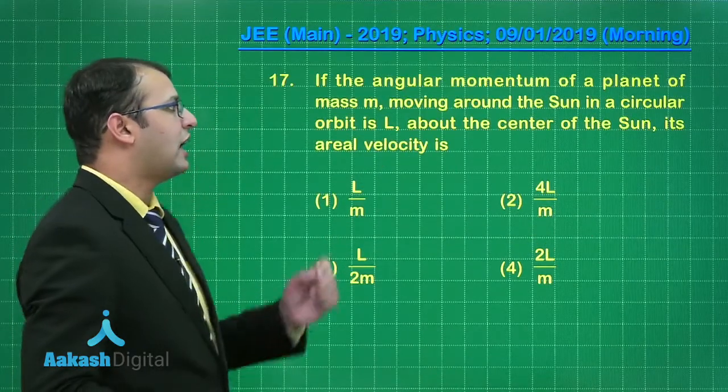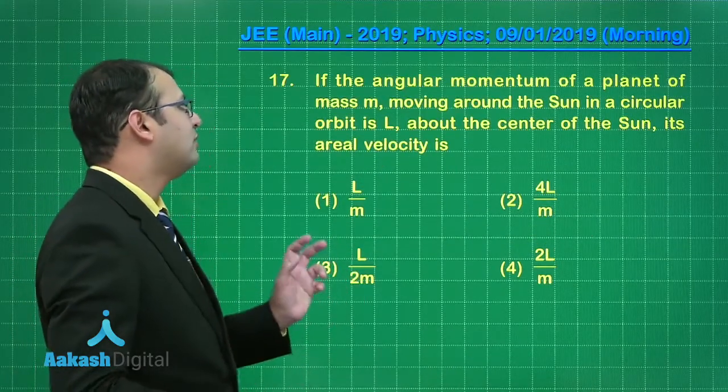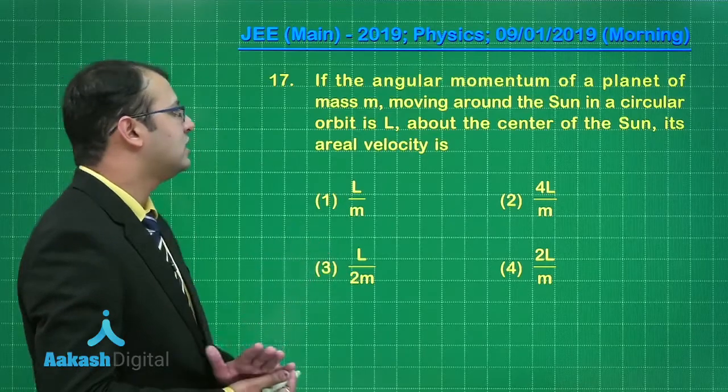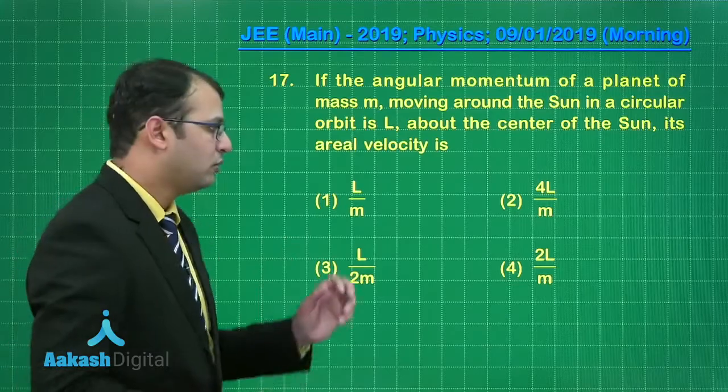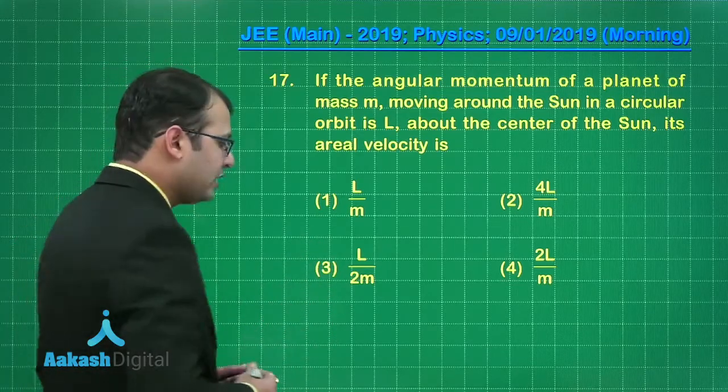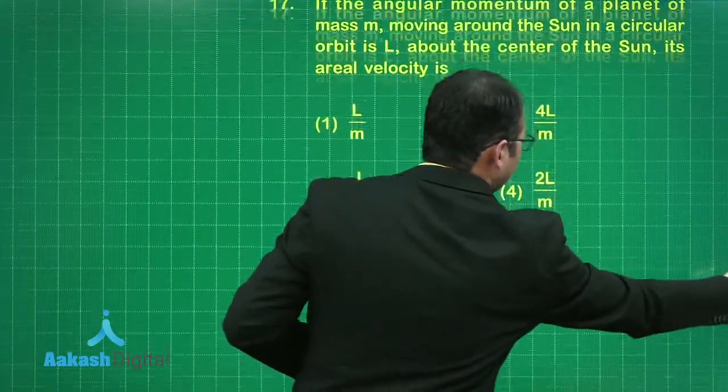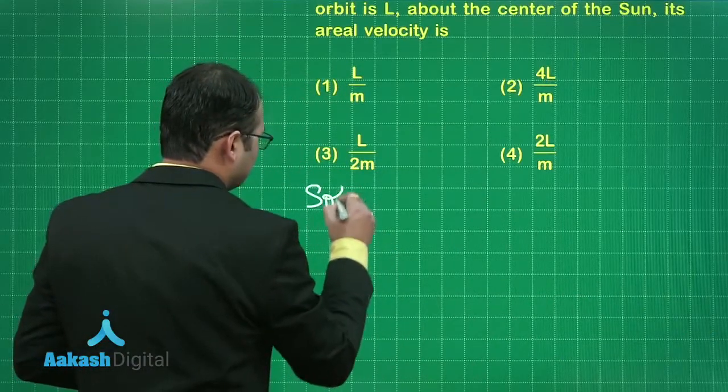In this question if the angular momentum of a planet of mass M moving around the Sun in a circular orbit is L about the center of the Sun, its areal velocity is what we require and it's very easy with the approach towards angular momentum.